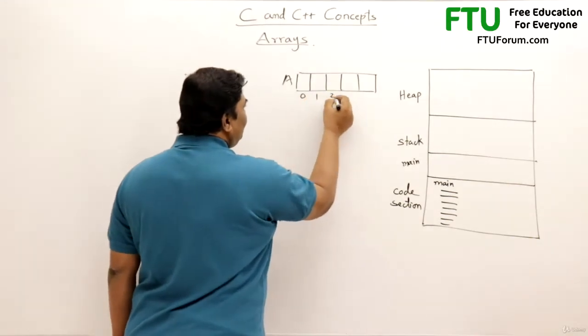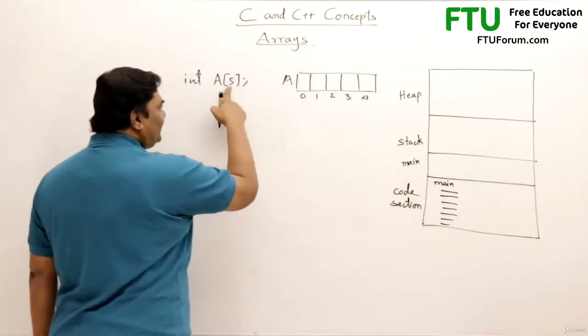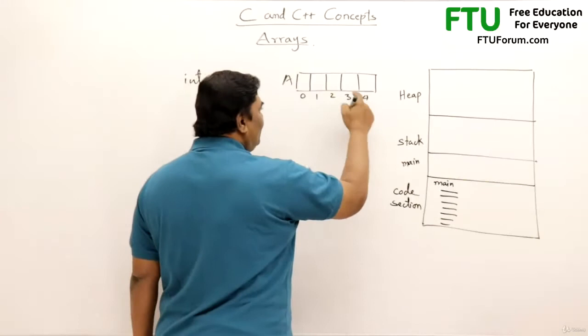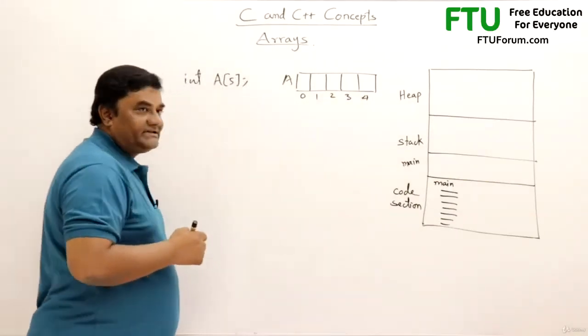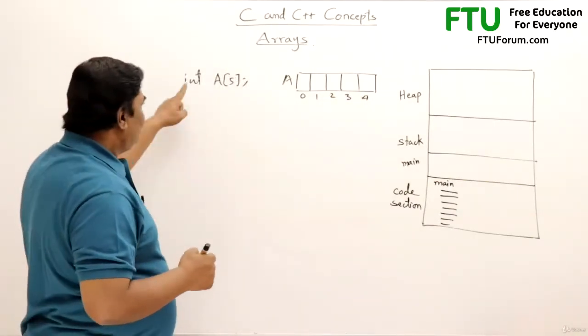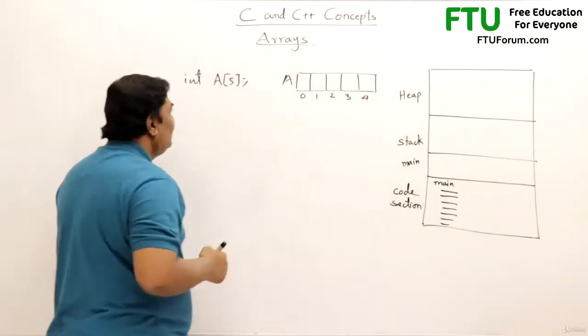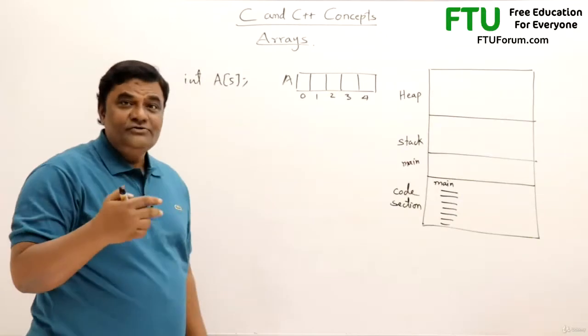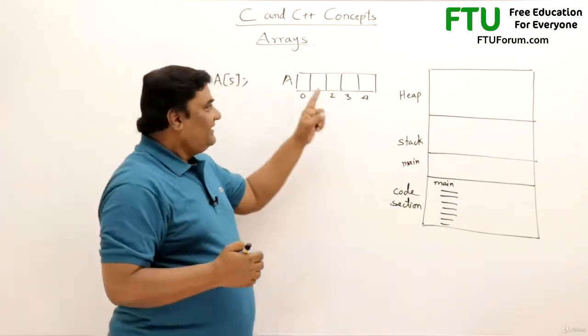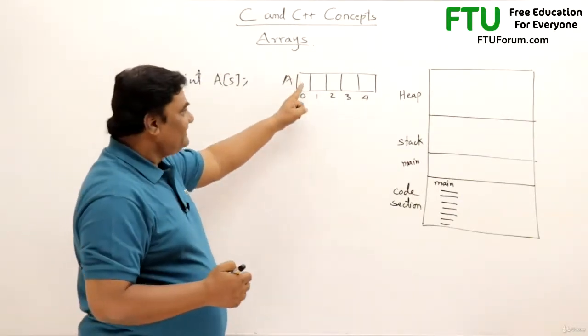And the indices will be 0, 1, 2, 3, 4. So 5 locations means the indices start from 0 and end at 4, total 5 spaces. Now I can store 5 integers. Every location is an integer, and if we assume integer is taking 2 bytes then these are total 10 bytes, 2 bytes each.